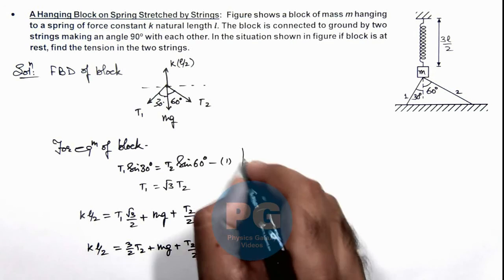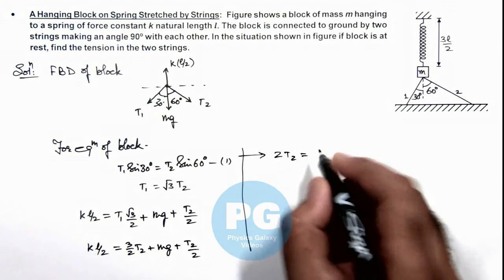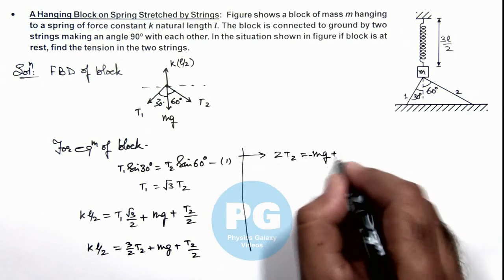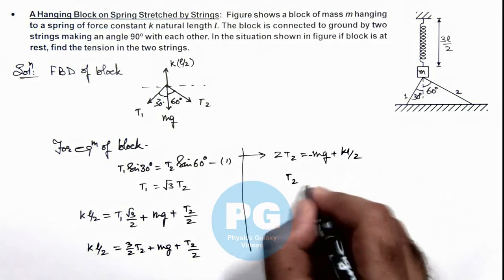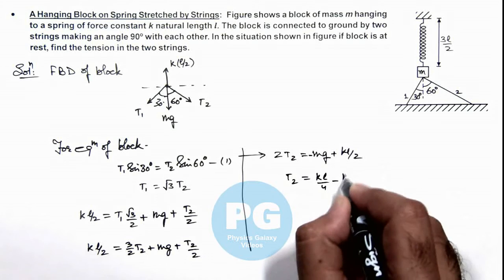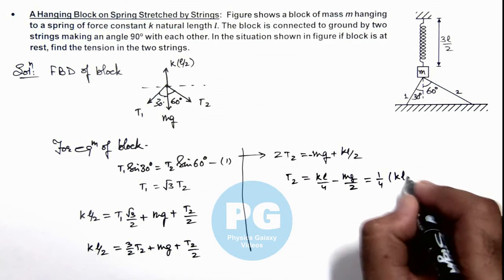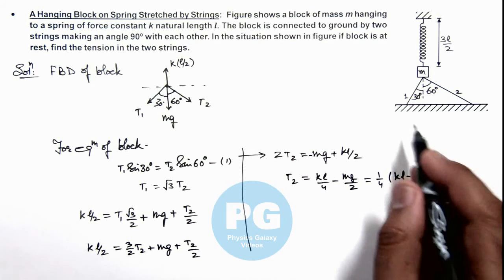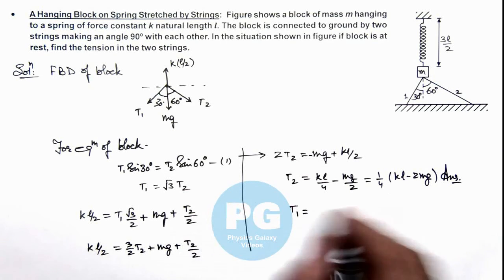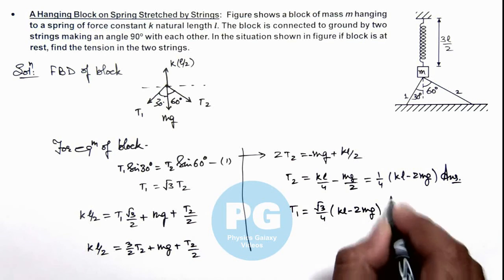Continuing from here, this equation gives 2·T2 = kl/2 − mg, so T2 = kl/4 − mg/2, or equivalently T2 = (1/4)(kl − 2mg). This is the first result of the problem for string 2. For string 1, we can directly write T1 = √3·T2, giving T1 = (√3/4)(kl − 2mg). This is the second result of the problem.